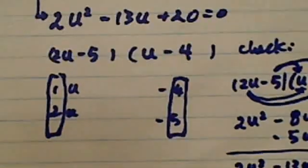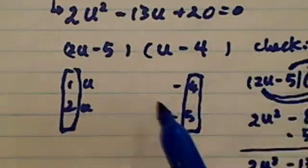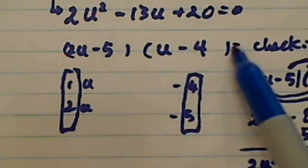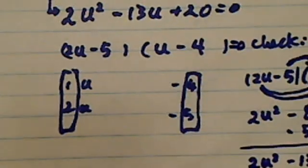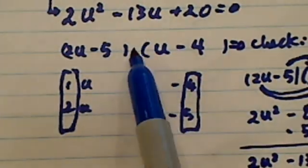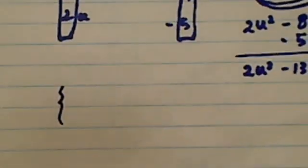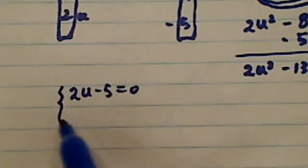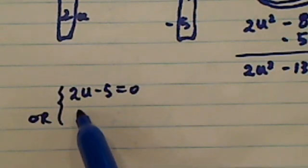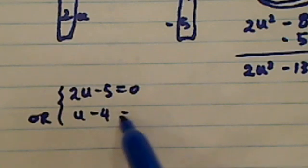Let's go back over here. So once I factor it, I have 2u minus 5, u minus 4 equal to 0. Property of production, a multiplication, tells me that I have two choices. I can either have 2u minus 5 equal to 0, or I can have u minus 4 equal to 0.